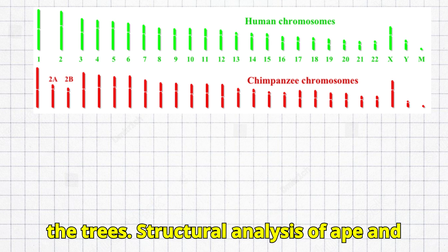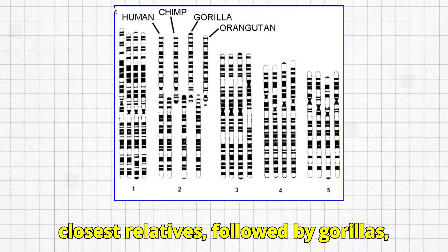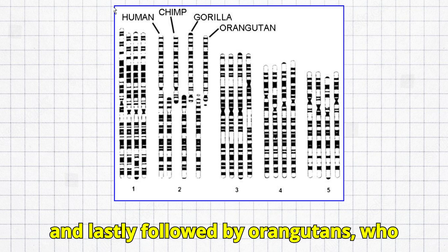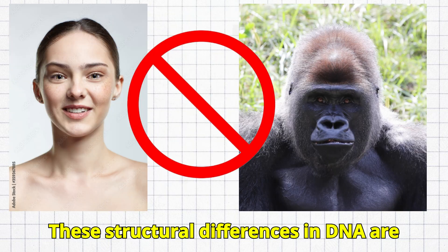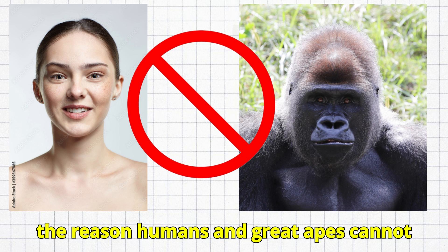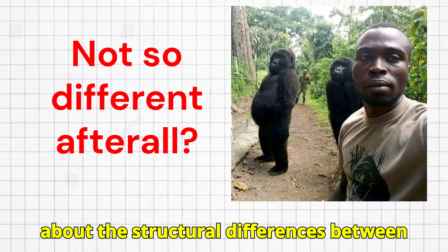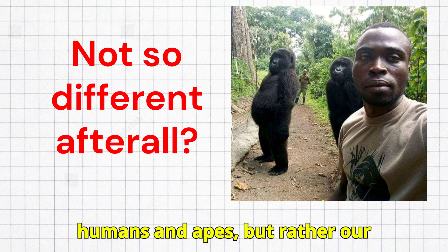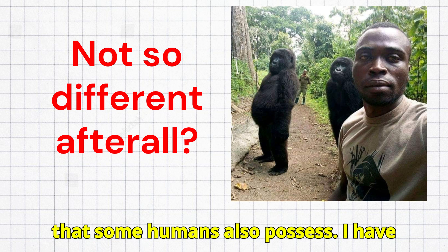Structural analysis of ape and human DNA reveals that chimps are our closest relatives, followed by gorillas, and lastly orangutans, who are most structurally different from us. These structural differences in DNA are the reason humans and great apes cannot interbreed. However, this video is not about the structural differences between humans and apes, but rather our similarities, and traits the apes have that some humans also possess.